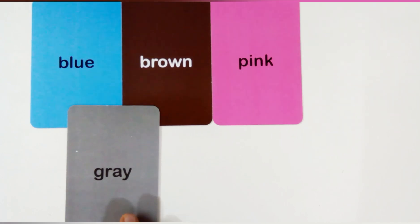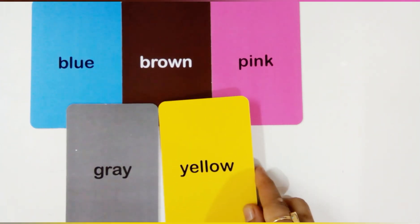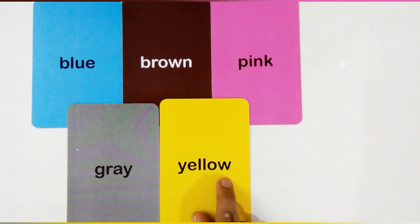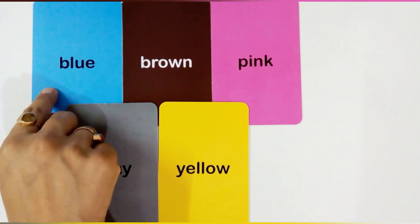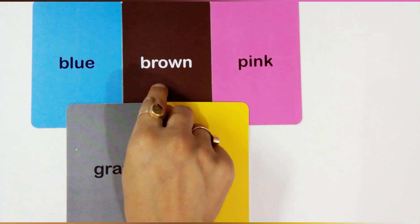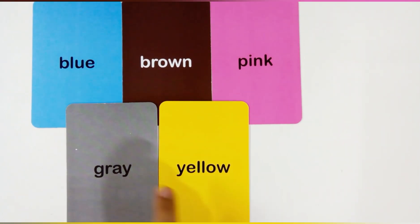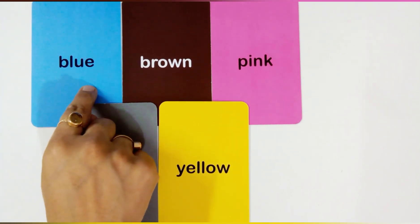This color is gray color. G-R-A-Y, gray. This is yellow color. Y for yellow. Y-E-L-L-O-W. This is yellow color. Blue color, brown color, pink color, gray color, yellow color.